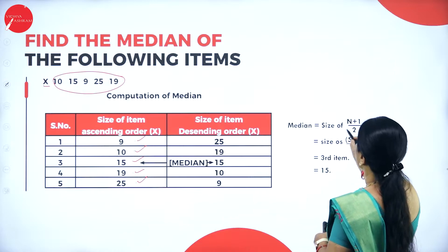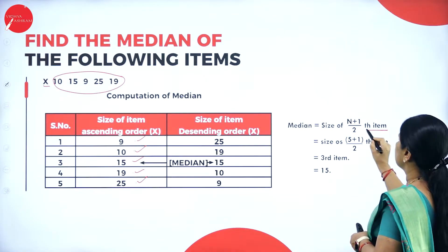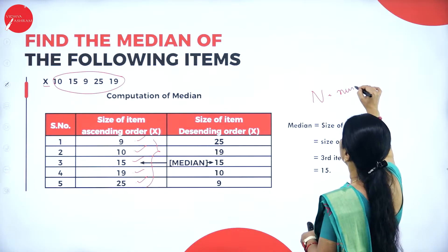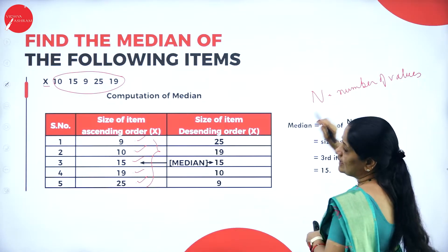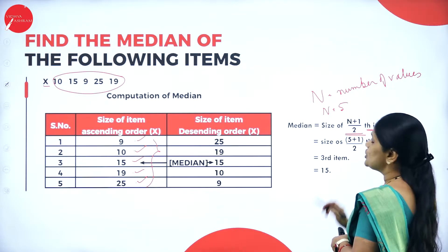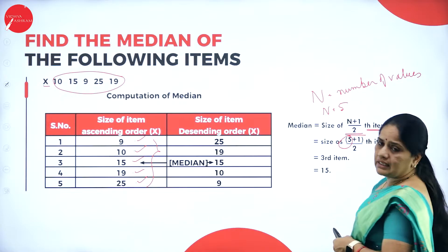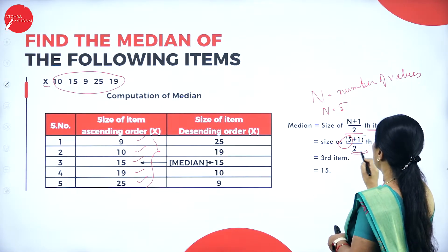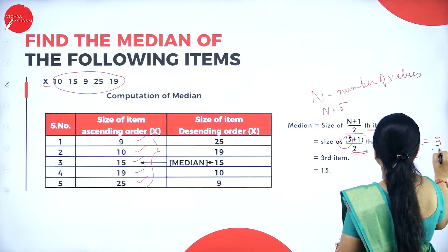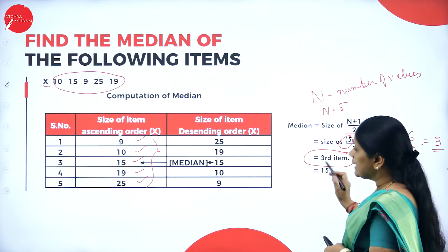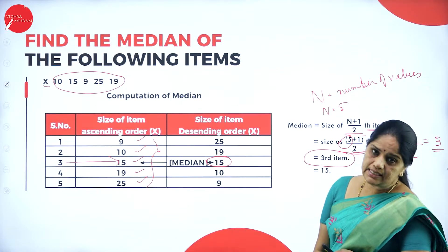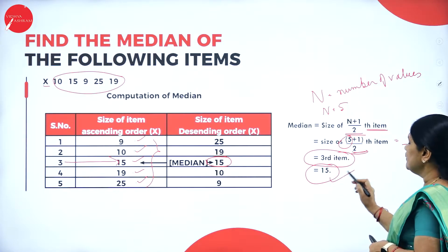The formula is: Median = size of (n+1)/2 th item, where n denotes the number of values. Here n equals 5. So (5+1)/2 = 6/2 = 3. The median relates to the third item. The third item is 15, so the median is 15.